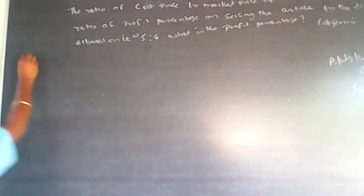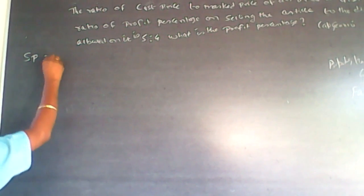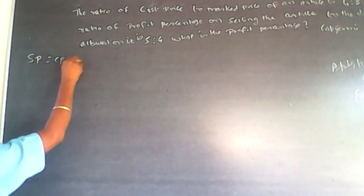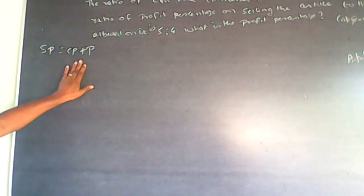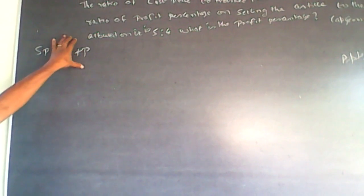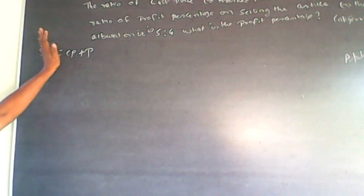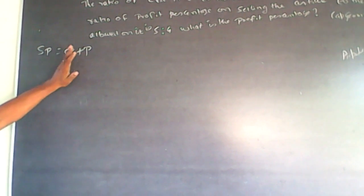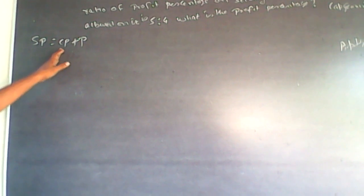Whenever I talk about cost price: selling price is always equal to cost price plus profit. By default, if I say I make a profit of 10%, it is always on cost — nothing is mentioned otherwise, it is always on cost.